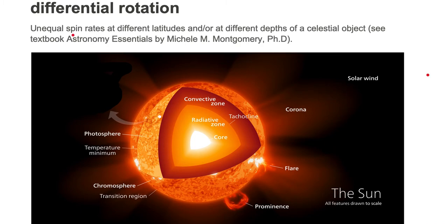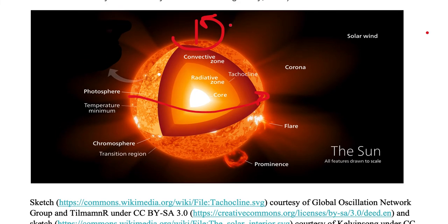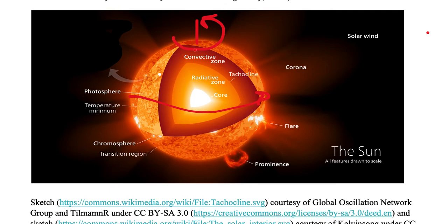Now let's look at the other case: unequal spin rates at different latitudes. In the case of the sun, the polar region rotates faster than the equatorial region. The polar region rotates much faster around the rotation axis than the equatorial region.